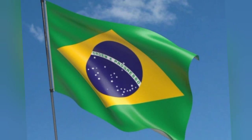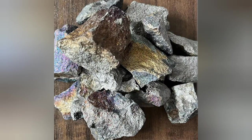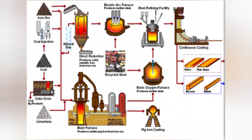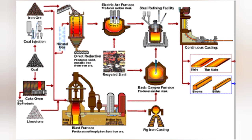Most of the manganese produced is used in the form of ferromanganese and silico manganese alloys for iron and steel manufacture. Manganese ores containing iron oxides are first reduced in a blast furnace or electric furnace with carbon to yield ferromanganese, which in turn is used in steel making.